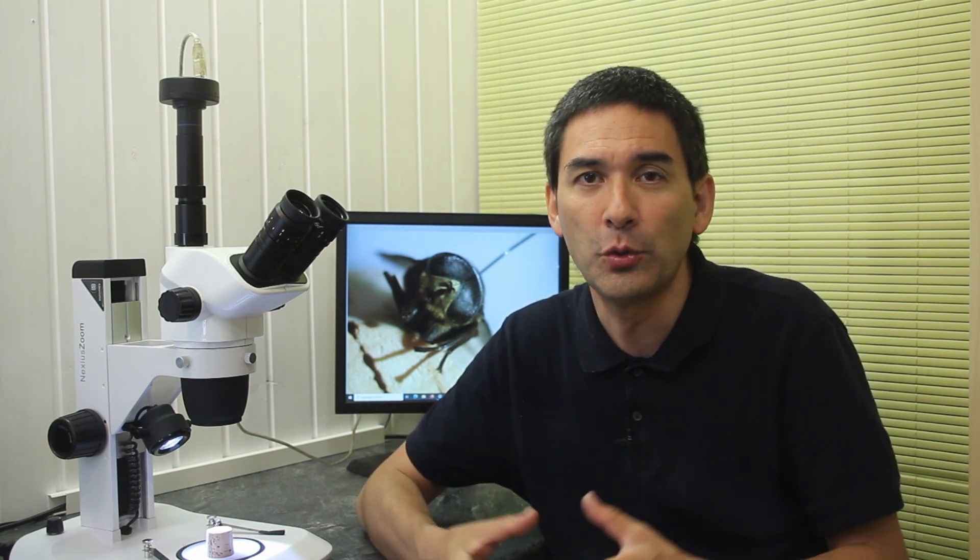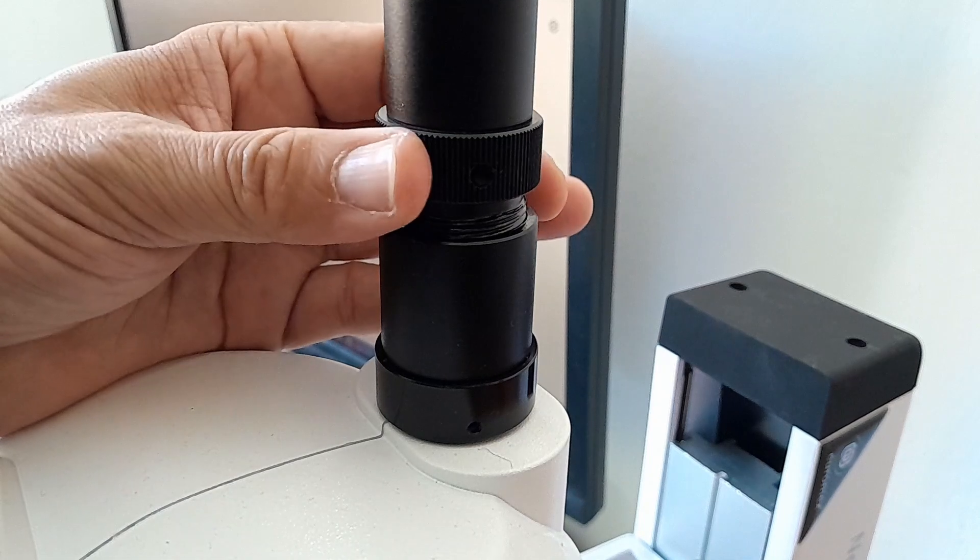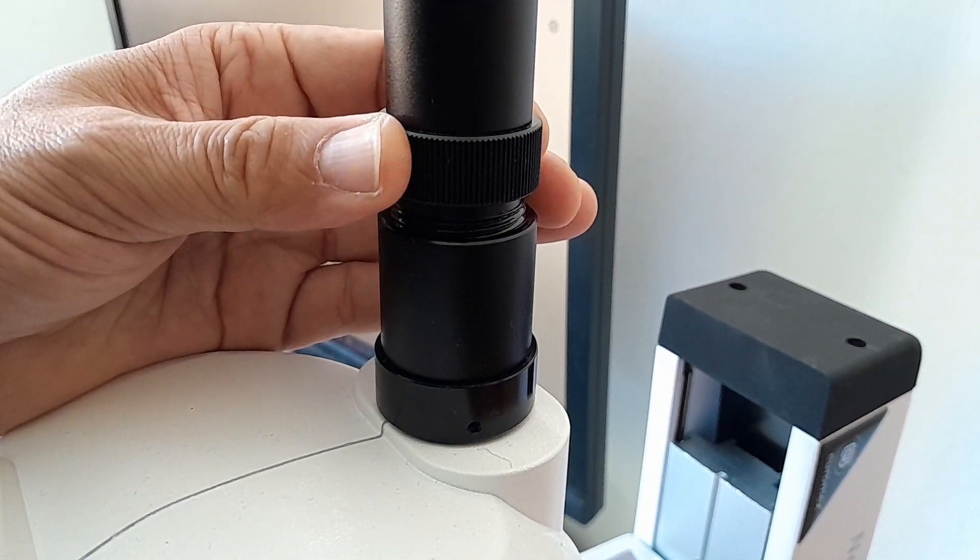Now a few words to the phototube. It is able to accept the standard 23mm USB microscope cameras like I've attached here. And by turning the phototube, you can also make sure that the focus in the camera matches the focus in the eyepieces. This is referred to as par-focality.